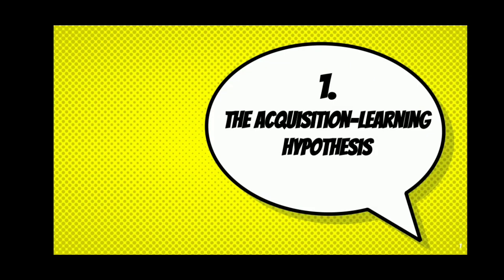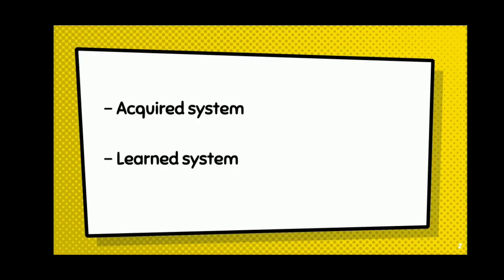Let's check them out. The first hypothesis is the Acquisition-Learning Hypothesis. It fuses two independent systems: the acquired system and the learned system. The acquired system concerns the process of when people learn their first language by speaking the language naturally in their life.